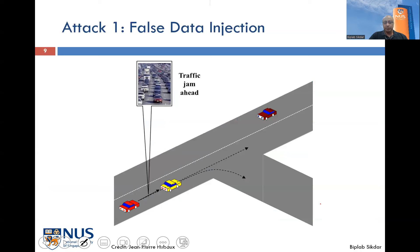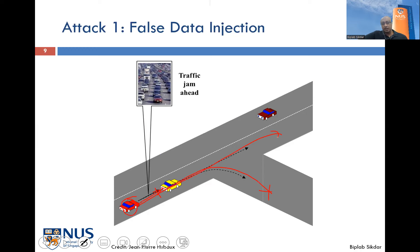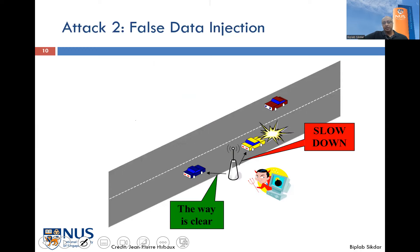To give a quick overview of some possible attacks: a malicious vehicle may inject false data. For example, two vehicles communicating to coordinate and make traffic flow smoother — if one sends a malicious message to the vehicle in front saying there's a traffic jam ahead, that car moves out of the way and the attacker has a clear path. This is a simple example, but it shows the potential for attacks in vehicle networks.